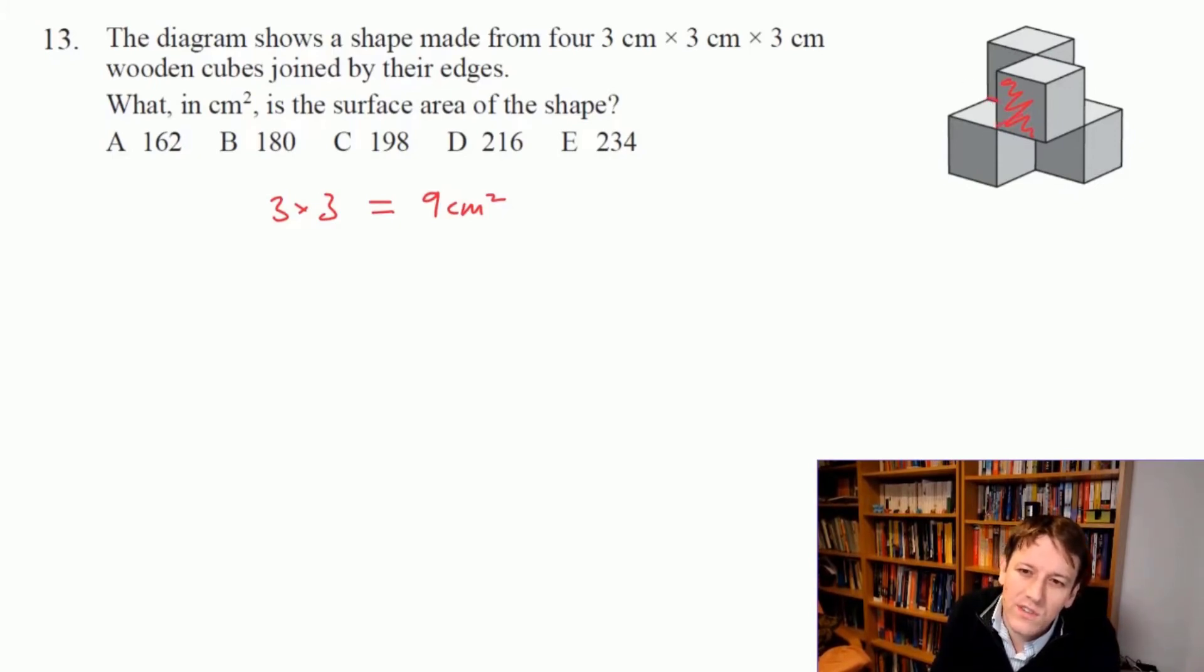We can see all the cubes, and all of the connections between these cubes are just along the edges, but there are no faces stuck together. So every cube has six faces, there are four cubes, so we've got 6 times 4 is 24 faces. All of those faces have 9 cm², so I just need to do 24 times 9.